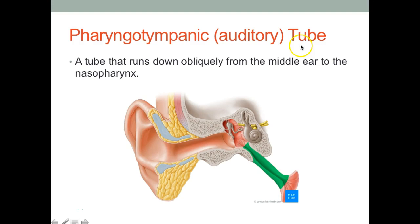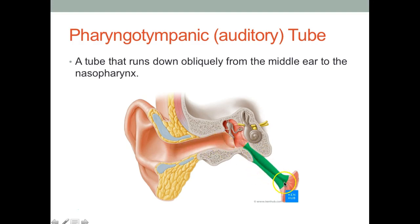The pharyngotympanic or auditory tube — another name is the eustachian tube — is a tube that runs obliquely from the middle ear to the nasopharynx area. Here it's highlighted in green — this is going to be the auditory tube. Please don't mix that up with the external auditory canal. The auditory tube and the canal are two different structures. The auditory tube or pharyngotympanic tube is part of the middle ear.